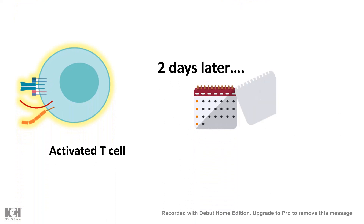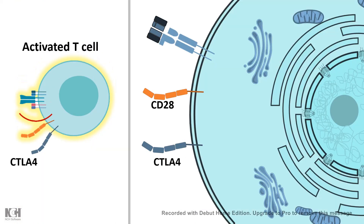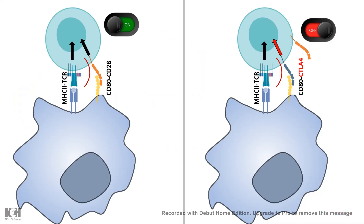Two days after the T-cell is activated, it is found that the T-cell surface expresses a molecule known as CTLA-4, which is very similar to the CD28 molecule. CD28 family molecules act as a co-stimulatory signal for T-cell activation, but CTLA-4 does not act as a co-stimulatory signal.